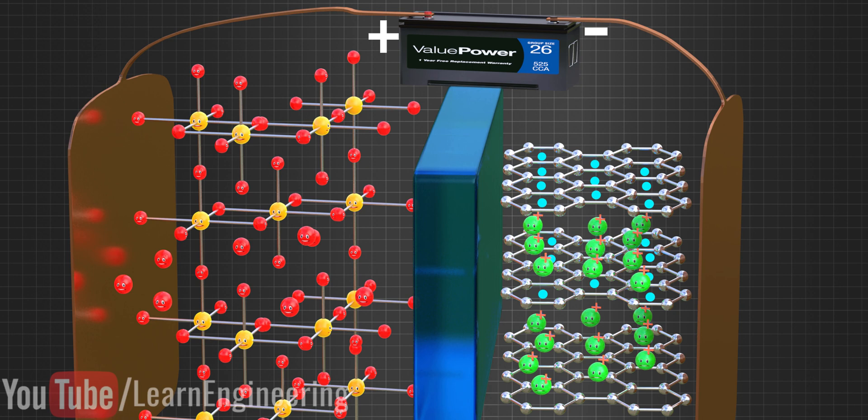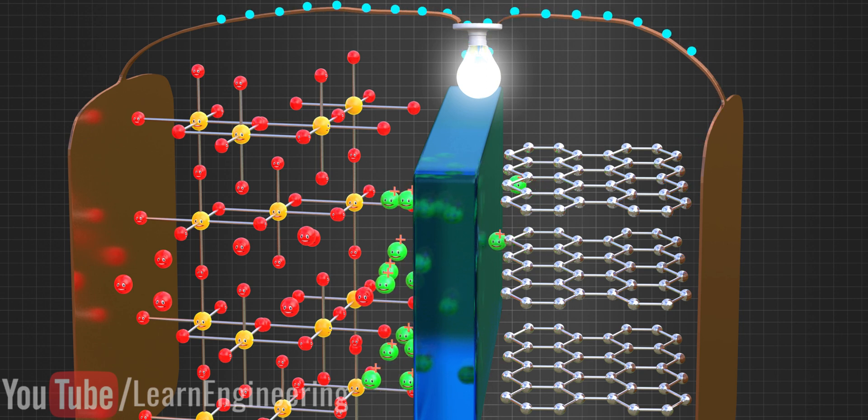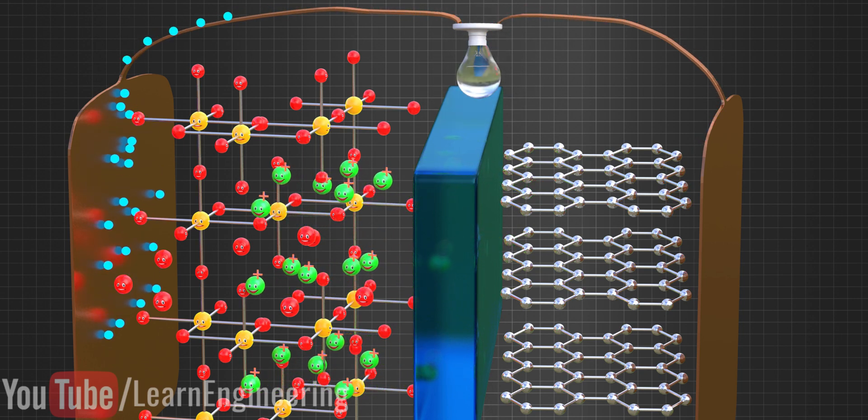As soon as we remove the power source and connect it to a load, all the electrons in the graphite will flow through the load, and hence, we can get electricity from this.